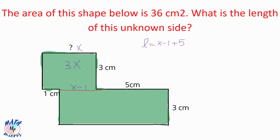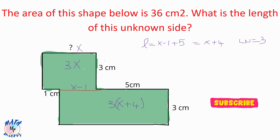The length of the bigger rectangle is x minus 1 plus 5, which equals x plus 4. The width is 3, so the area is (x + 4) times 3. Expanding: 3 times x is 3x, and 3 times 4 is 12, giving an area of 3x plus 12 for the bigger rectangle.